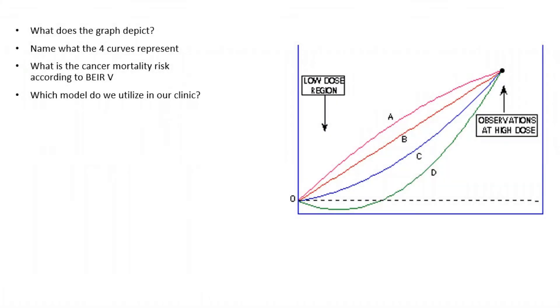During part three, you are going to have many graphs and figures shown to you and they may simply ask you to describe them. What is its clinical significance? So something similar to this, where they may say what does the graph depict, what do the four curves represent, what is the cancer mortality risk according to BEIR 5, and what model do we utilize in our clinic?